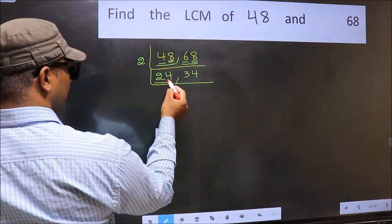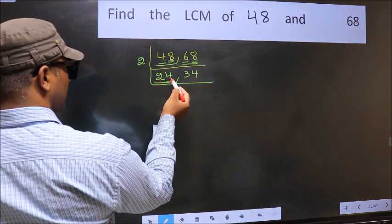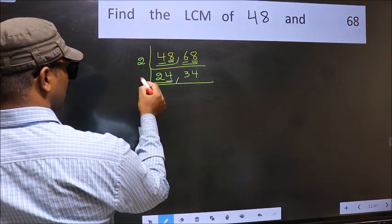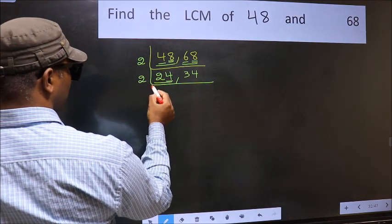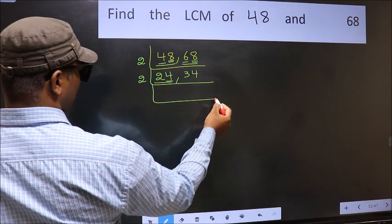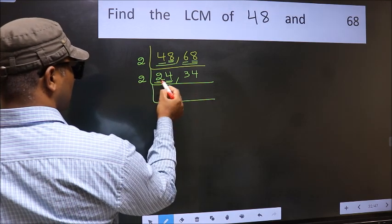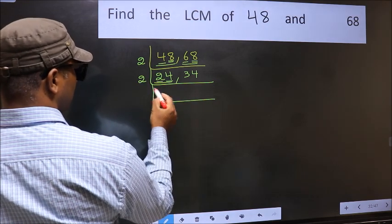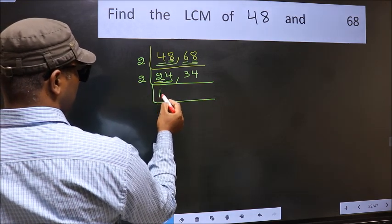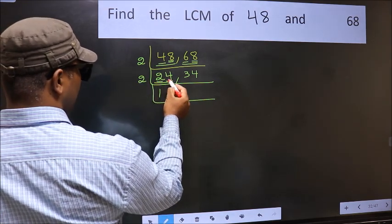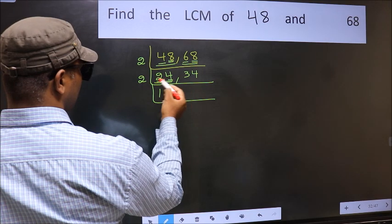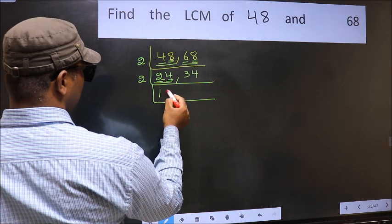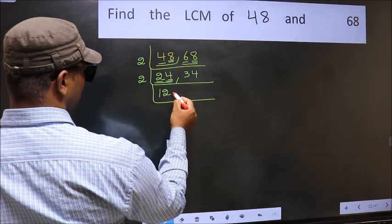Now here we have 24. Last digit is 4, so take 2. First number 2 — when do we get 2 in the 2 table? 2 times 1 is 2. The other number 4 — when do we get 4 in the 2 table? 2 times 2 is 4. So 24 divided by 2 gives 12.